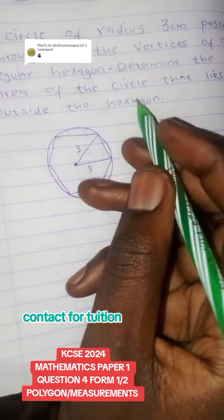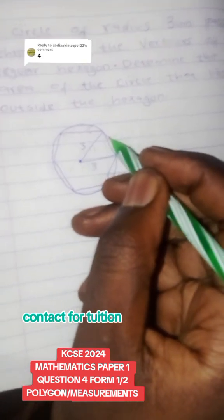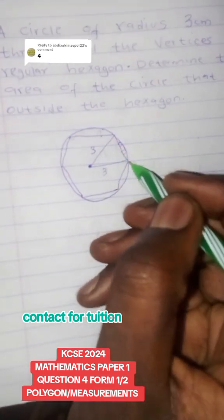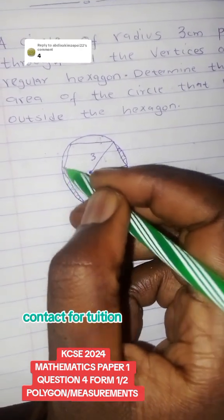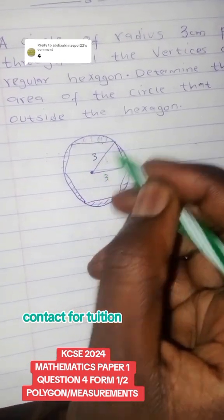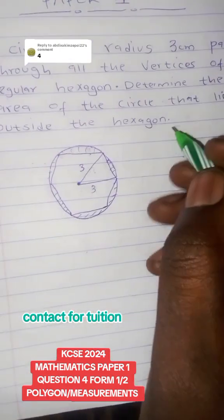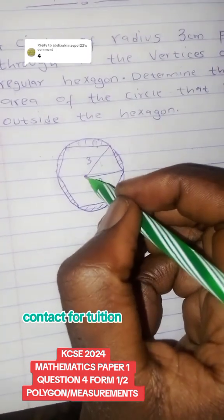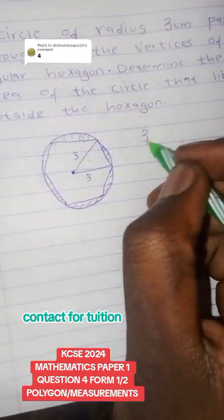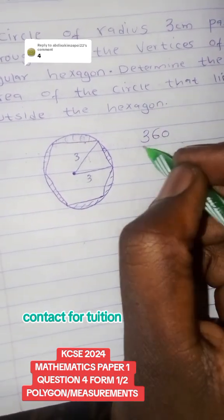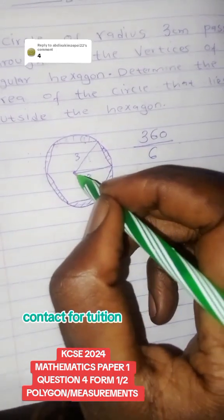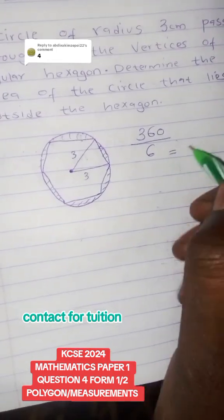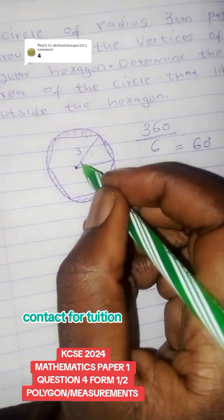We need to determine the area of the circle that lies outside the hexagon — that's this shaded area here. I'm going to base my work on one side of the hexagon. Because a hexagon has six sides, I divide 360 by 6, and since angles at a point add up to 360 degrees, every angle here is 60 degrees.